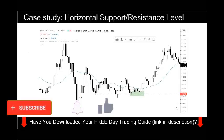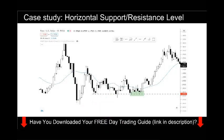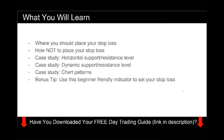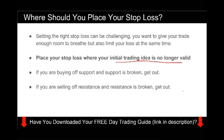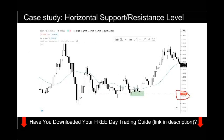Now let's look at the case studies. For horizontal support and resistance levels, I've identified the level at 1.0775, which is where you are interested in buying. Remember, you want to set your stop loss where your initial trading idea is no longer valid. If your key level is 1.0775, then you want to set your stop loss when this level is broken — a logical level would be below the candle low here.